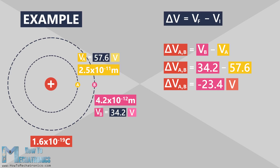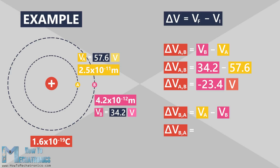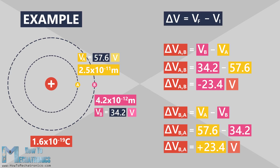We got a negative potential difference, or as we go from A to B, the potential decreases. In the second case B is our initial potential and A is our final potential, so the potential difference is going to be 57.6 minus 34.2, which is equal to plus 23.4 volts. We have a positive potential difference, or as we go from B to A, the potential increases.